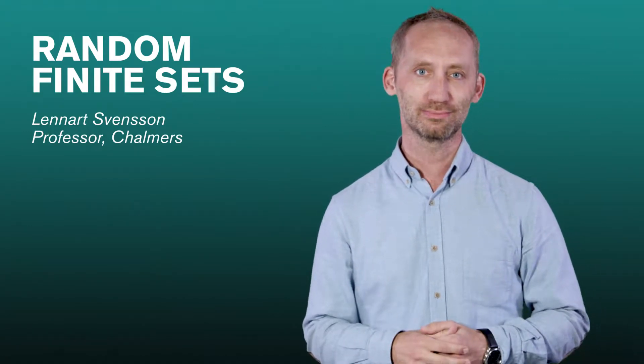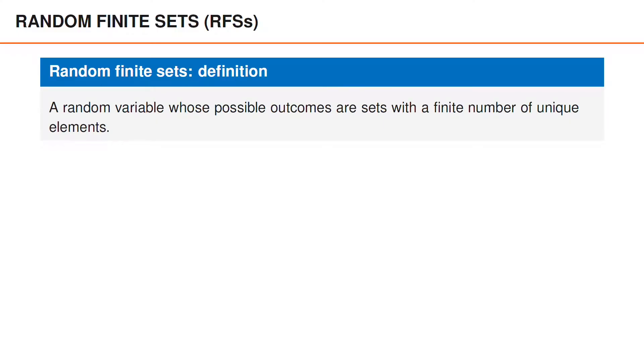In this video, we begin this small journey by introducing random finite sets as a new type of random variable and discuss their basic properties. Starting from the beginning, a random finite set is a random variable whose possible outcomes are sets with a finite number of unique elements.